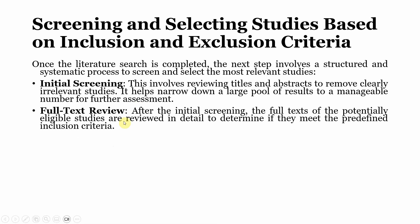Full text review: after the initial screening, the full texts of potentially eligible studies are reviewed in detail to determine if they meet the predefined inclusion criteria. For example, if you are only focusing on empirical studies, you can check the method section of the abstract. If a study focused on interviews with no empirical quantitative evidence, you can exclude it.